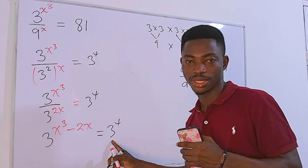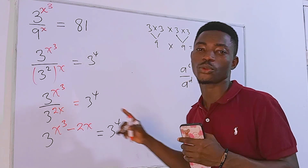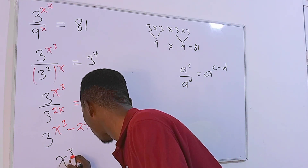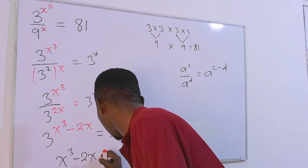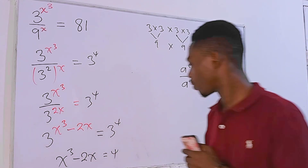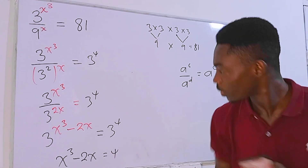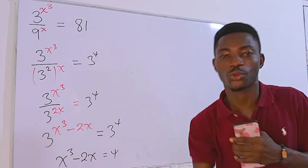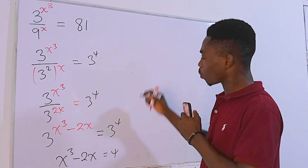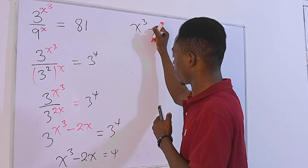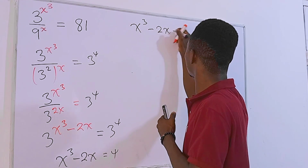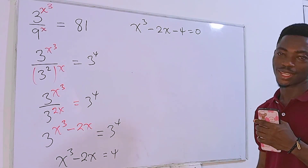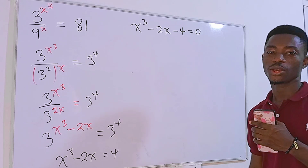We have 3 as the base on both sides, so we can equate the exponents. The new equation is x cubed minus 2x equals 4. We can clearly see we have a cubic equation, and to solve it we first set everything equal to zero: x cubed minus 2x minus 4 equals 0.